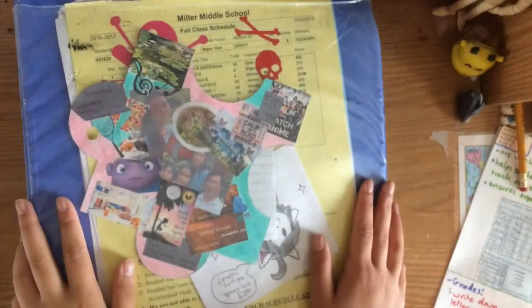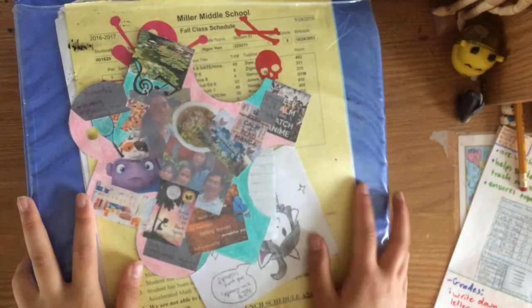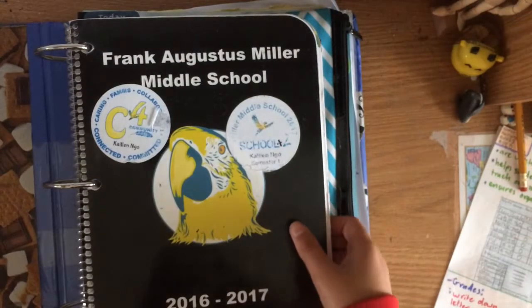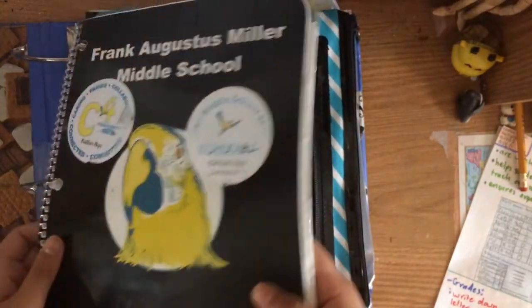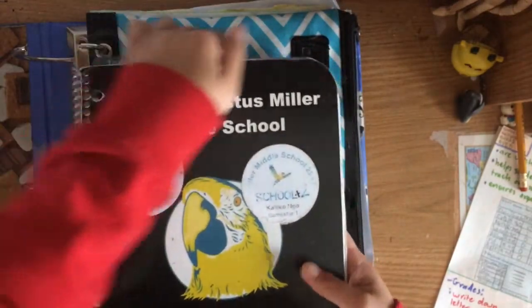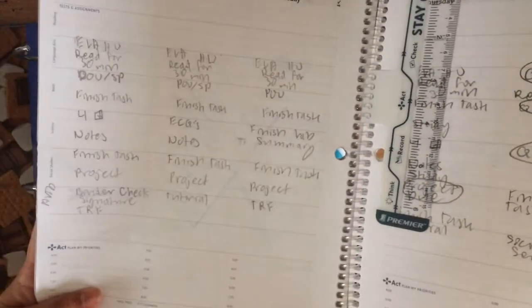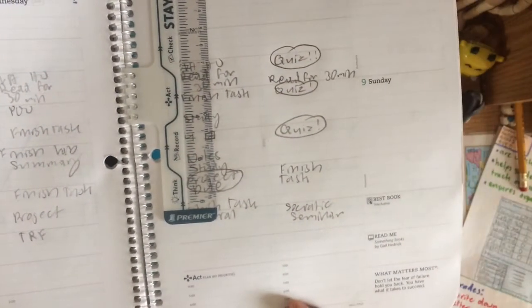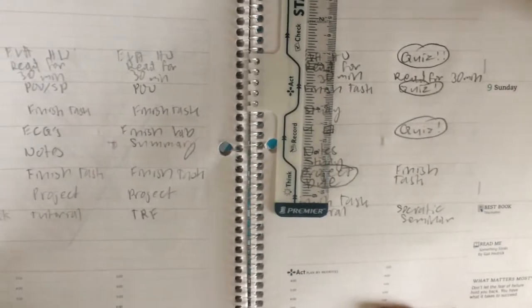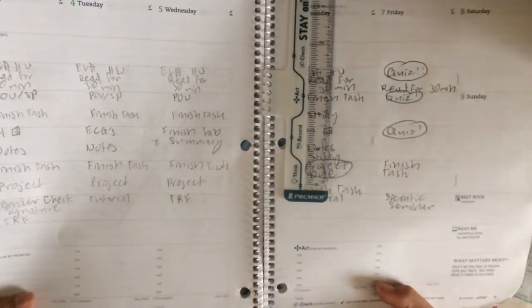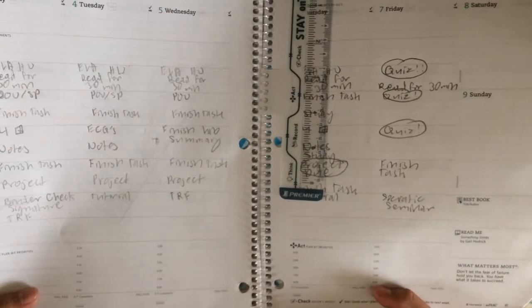The next part of the binder check is to check out your filled planner. I will be using a random page from my planner as an example. Planners must always be filled out when the tutor is checking them. Remember, please do not fill them out right before the tutor will check them, or else you will get a zero.